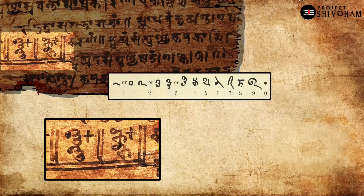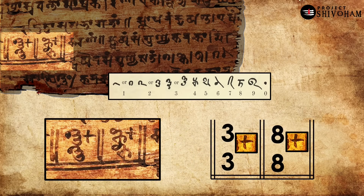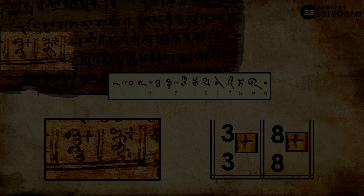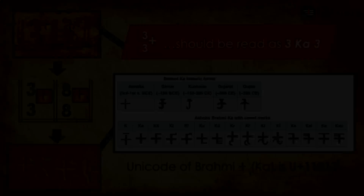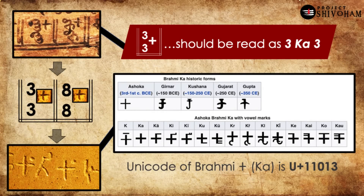The numbers one to zero are shown here — this is how the Bhakshali Manuscript is written. We can see three on top of three with the symbol, and eight on top of eight with the symbol again. It looks like kindergarten mathematics, but to understand what this plus-like symbol is, we turn to the Edicts of Ashoka — one of the oldest written formats of Sanskrit — where this character is found all over, used many times. So let us understand the meaning and sound value of this symbol.